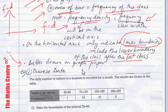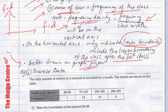It's better to draw histograms on graph paper. Let's look at a couple of examples — first we'll deal with discrete data histograms for discrete data.